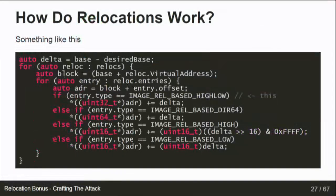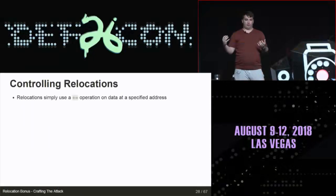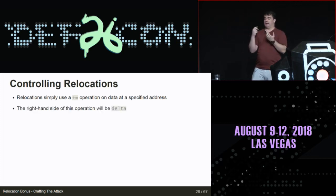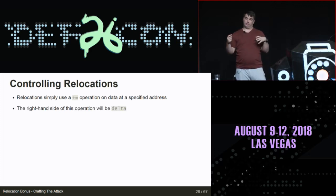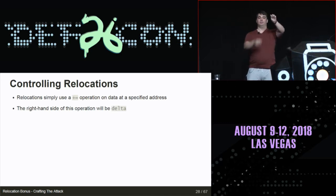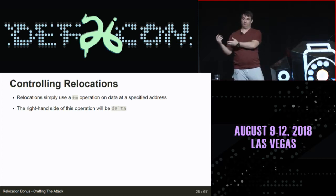This pseudocode describes how the loader does relocations. The key line is: delta equals base - that's the base we're actually mapped at - minus desired base, the base we asked for in the PE header. Then for each relocation entry, a plus-equals operation is applied using delta as the right-hand side. So everything that is relocated gets its value incremented by delta, which is derived from the actual load address minus the requested address. That's how everything gets fixed up to point to the right place.